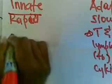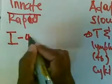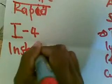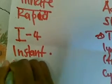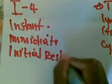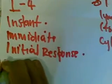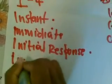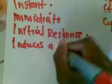To further clarify on innate immunity — because it's the one we're going to be talking about — whenever I see innate, I see four I's. By four I's, I mean: it is Instant, it is Immediate, it is an Initial response, and it Induces adaptive immunity.